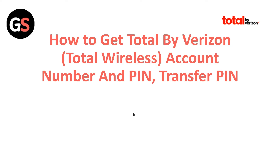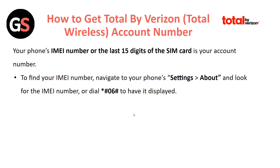Now let's begin. Here is the first way to get an account number in Total Wireless. Your IMEI number, or the last 15 digits of the SIM card, is your account number. To find your IMEI number, navigate to your phone Settings, then About, and look for the IMEI number.